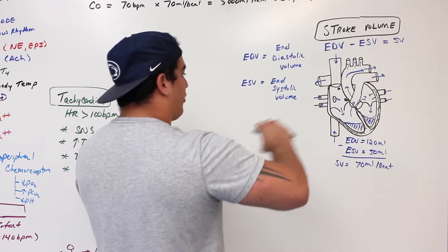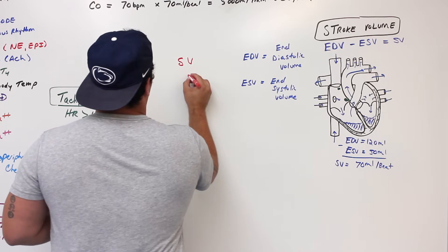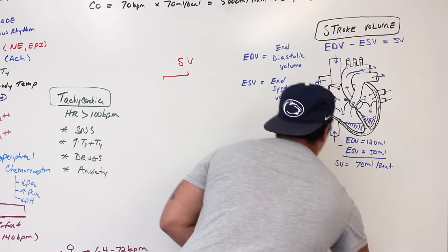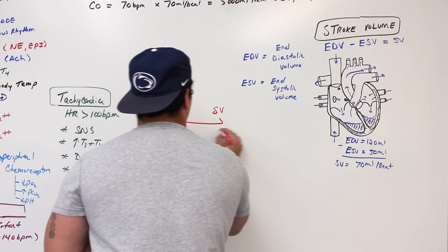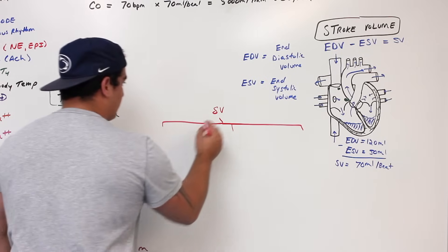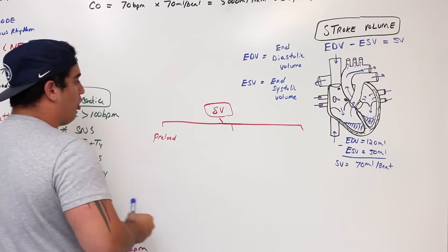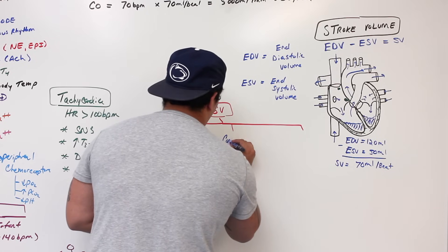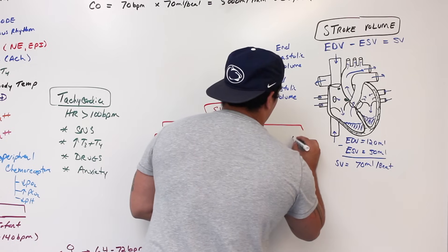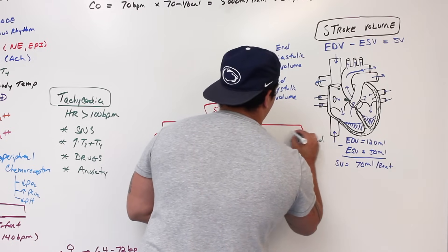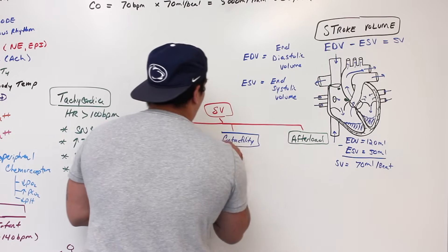Stroke volume is actually divided into three subcategories. Stroke volume is dependent upon: preload, contractility, and afterload. Let's go through each one and see how they affect stroke volume and cardiac output.